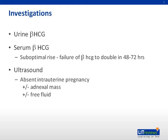Mandatory investigations include a serum beta-HCG level as well as an ultrasound of the pelvic organs. Suboptimal rises in beta-HCG are commonly seen in ectopic pregnancies. Ultrasound of the pelvis may reveal absence of an intrauterine gestation. Occasionally, adnexal masses may be seen, and free fluid in the pouch of Douglas if the ectopic pregnancy has ruptured.